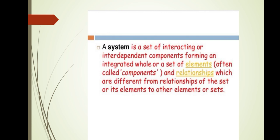A system is a set of interacting or interdependent components forming an integrated whole, or a set of elements and relationships which are different from the relationships of the set or its elements to other elements or sets.